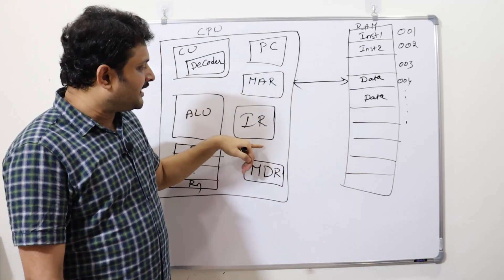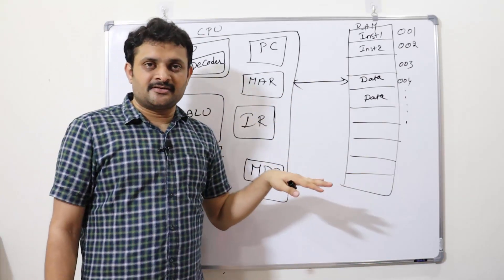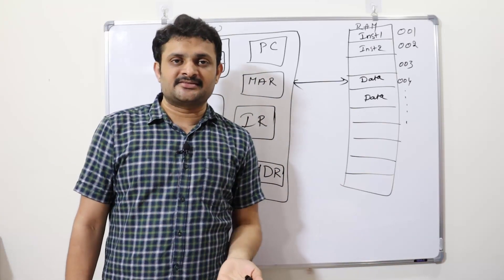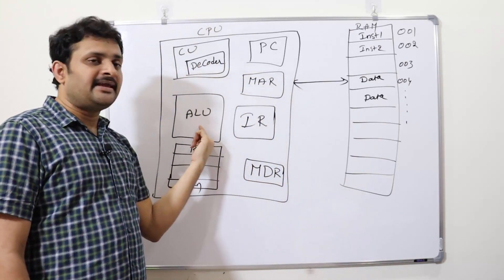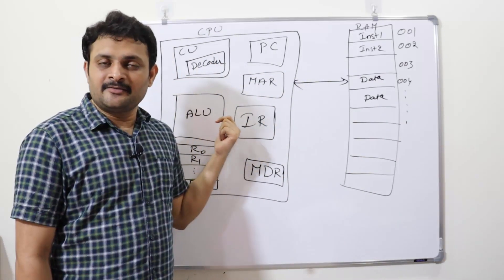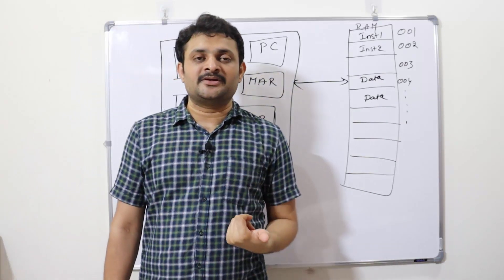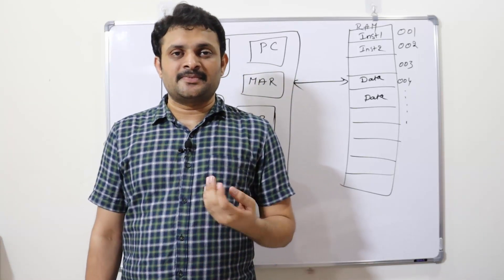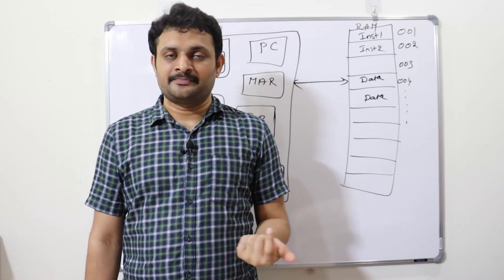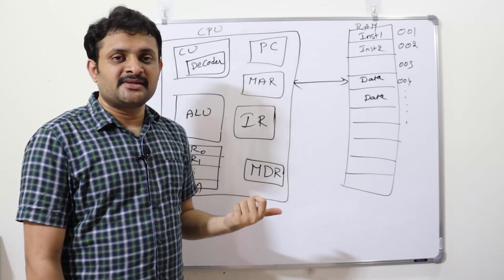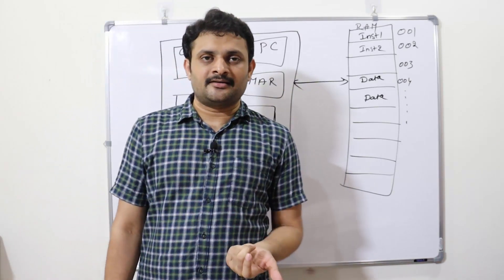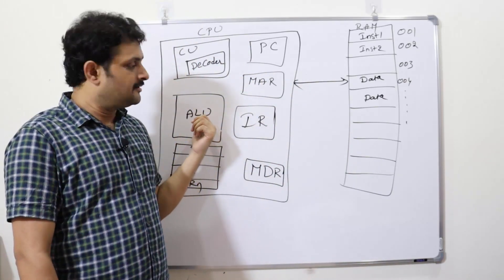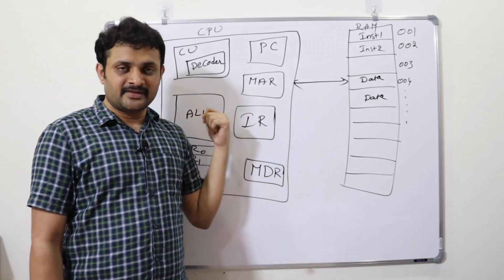Fetching happens up to the IR stage; decoding happens at the decoder; and then the instruction is passed to the ALU — the Arithmetic and Logic Unit. The ALU performs all arithmetic operations (addition, subtraction, multiplication, division) as well as logical operations (AND, OR, NOT, less than, greater than, etc.).